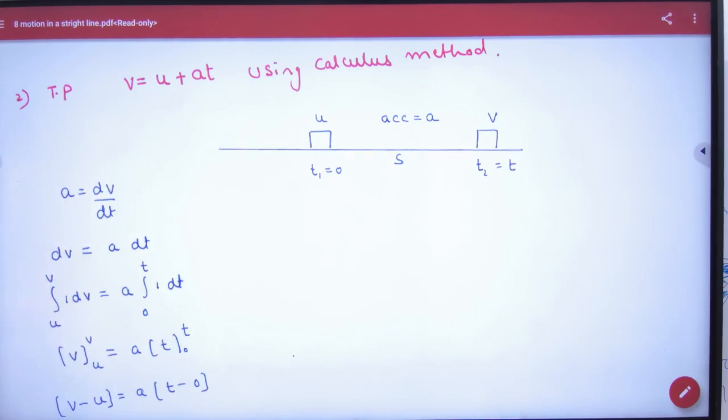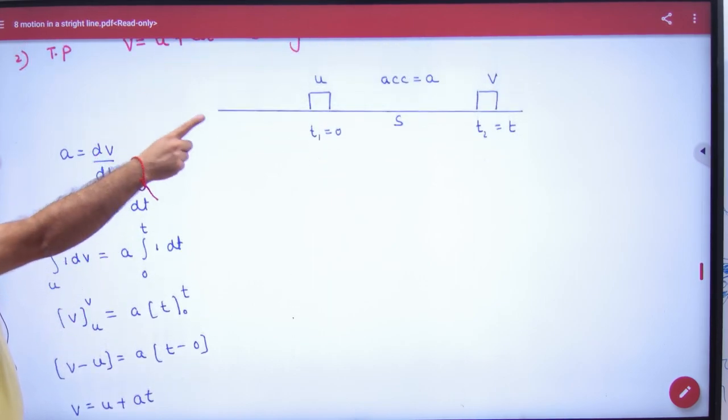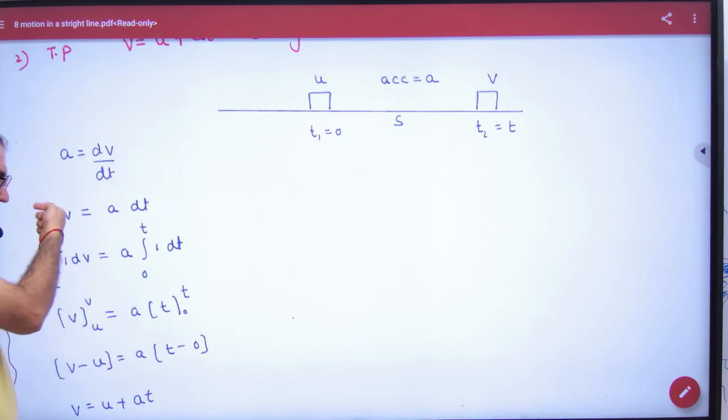So first step we will see acceleration, what is instantaneous? dv by dt. Cross multiply. The limit for velocity, what do you think? First velocity is u and then v. So u to v.